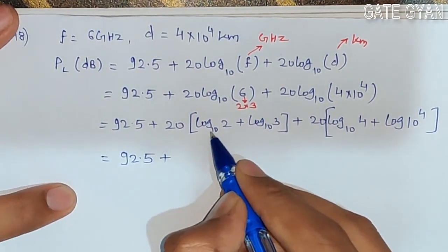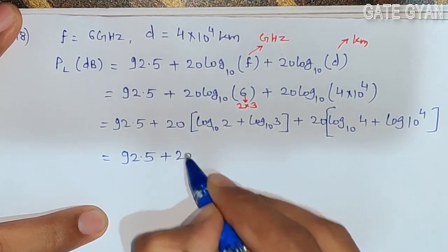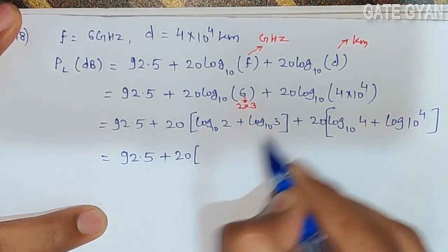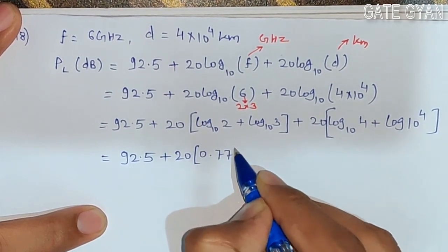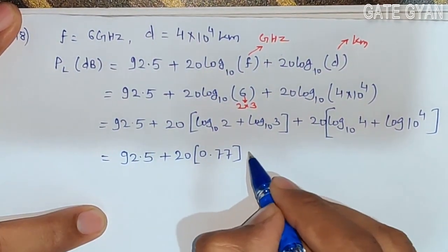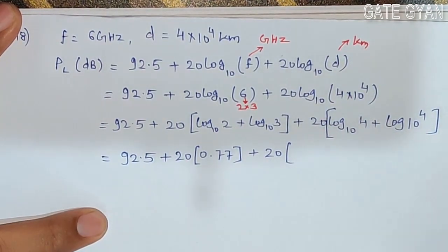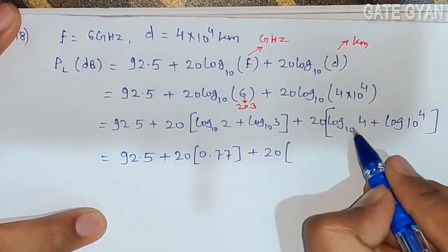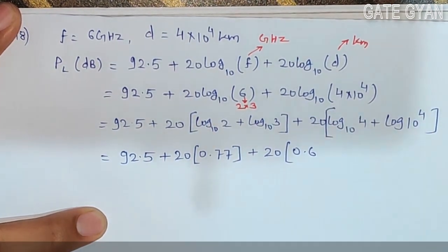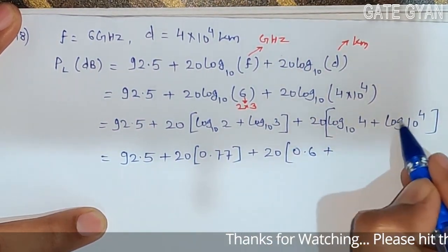Log of 2 is 0.301, so it is 20 × 0.301. If you add the log of 3, which is 0.477, it will be approximately 0.77. Plus 20log₁₀(4), which is 0.6 approximately, plus 4.